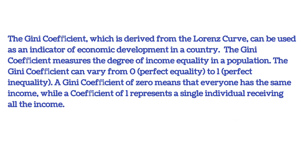Gini Coefficient किसी population में income equality की degree को नापता है. Gini Coefficient 0 से 1 तक different हो सकता है. 0 का Gini Coefficient का मतलब है कि सभी की income equal है, जबकि 1 का coefficient यह बताता है कि एक व्यक्ति सभी income प्राप्त कर रहा है.